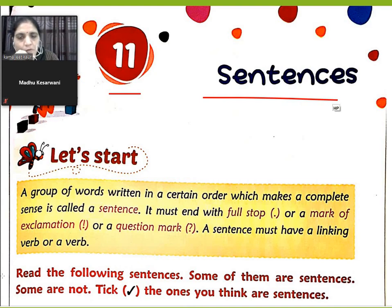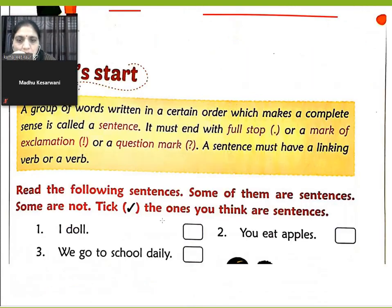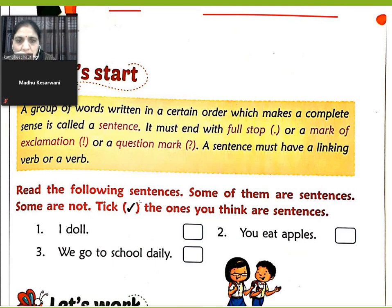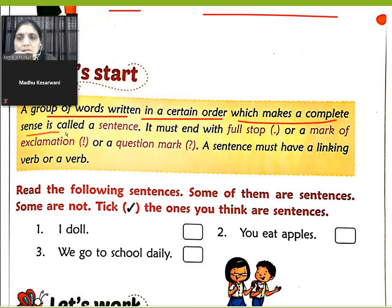What is a sentence? The correct sequence of words is called a sentence. A group of words written in a certain order which makes a complete sense. It must end with a full stop.